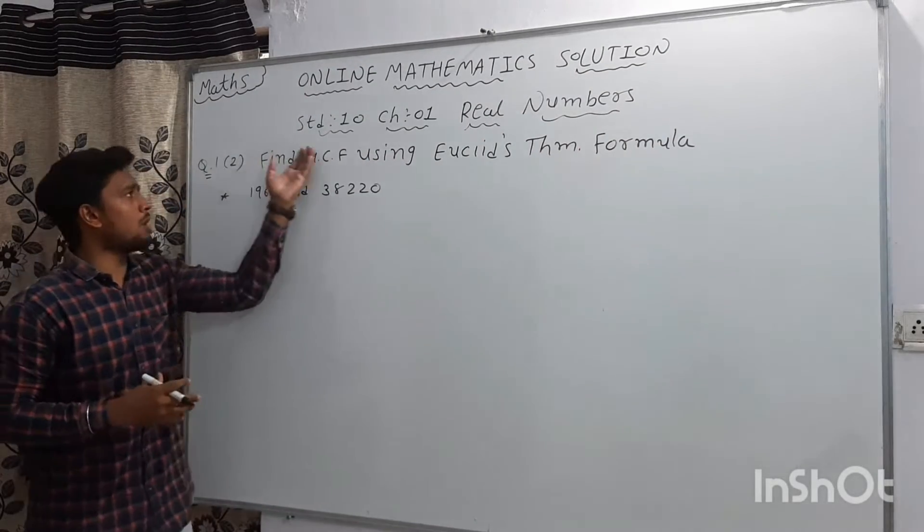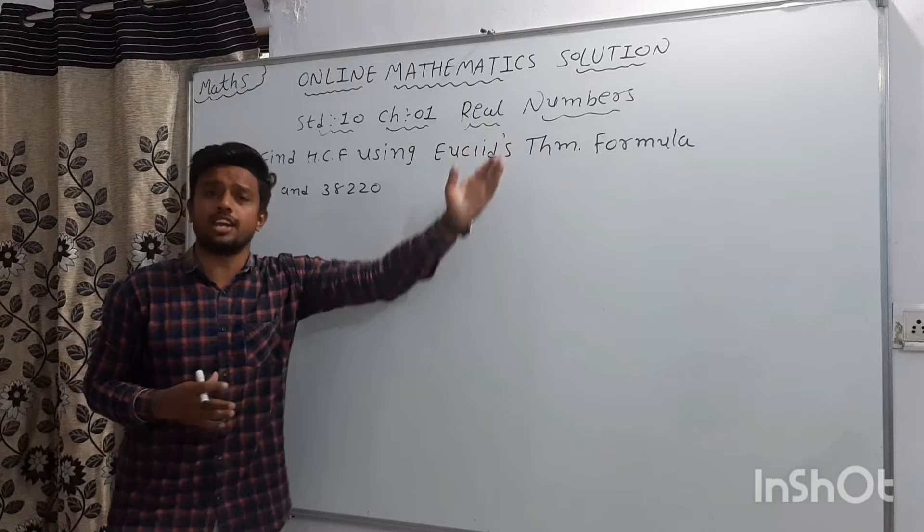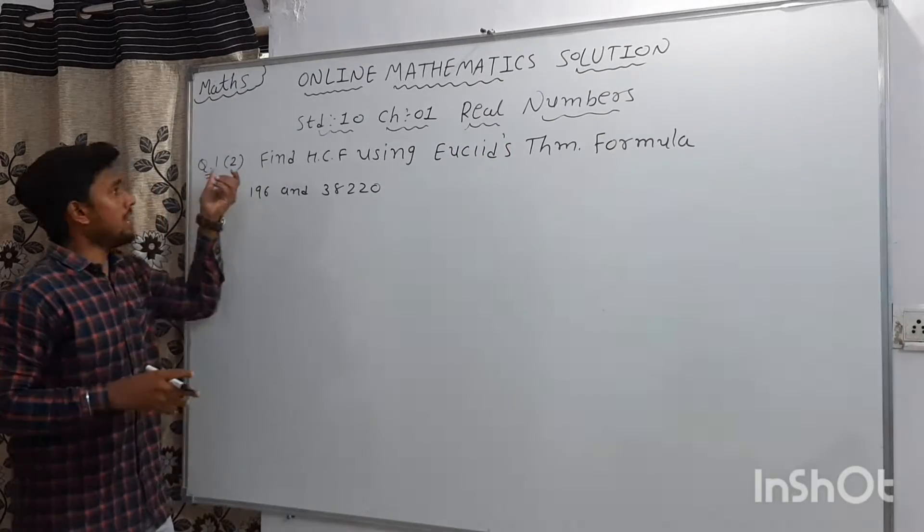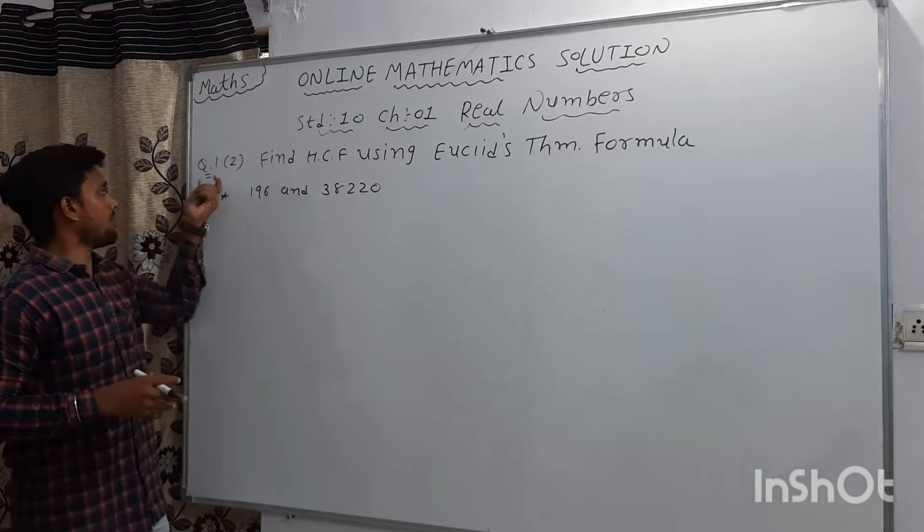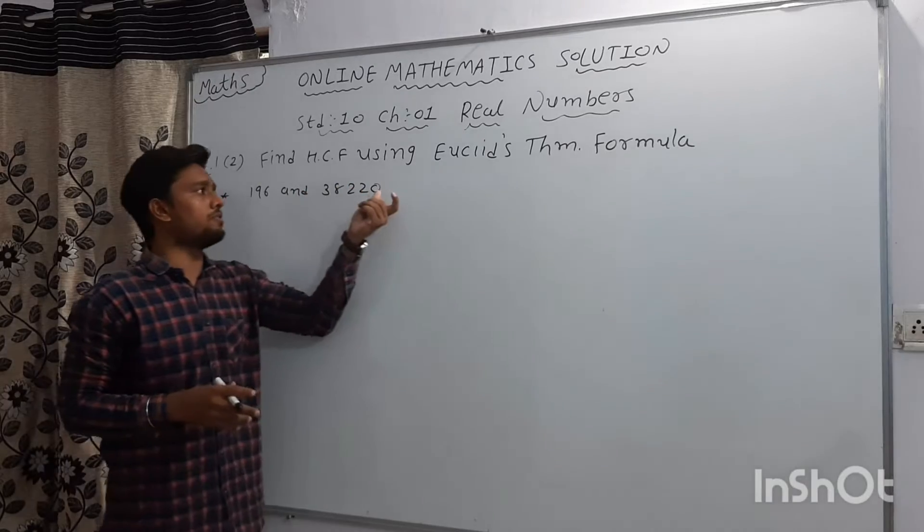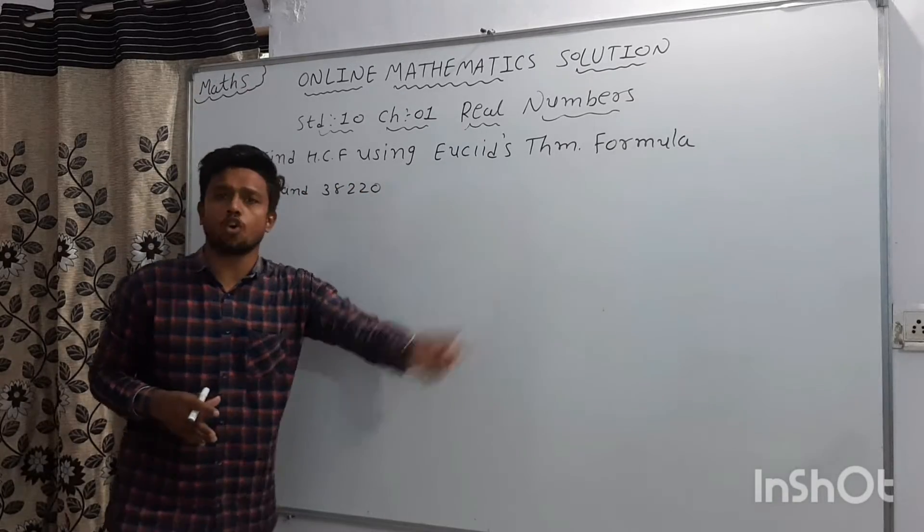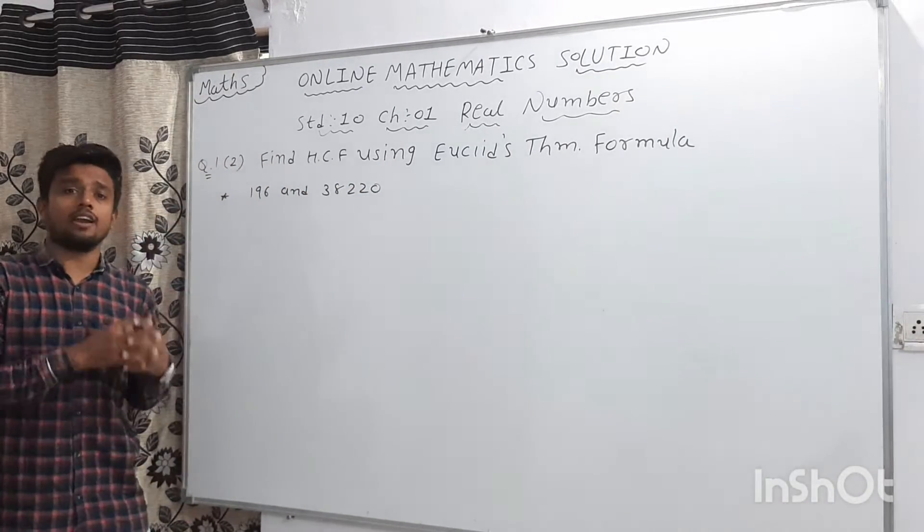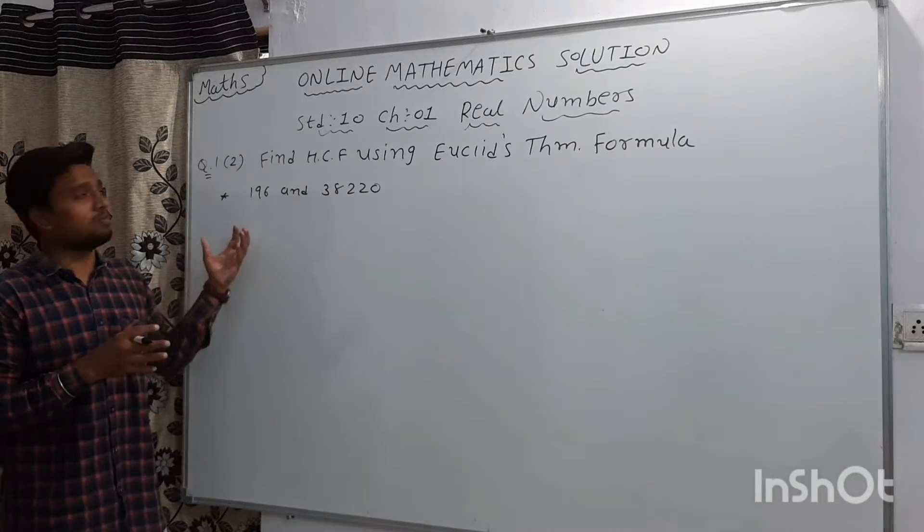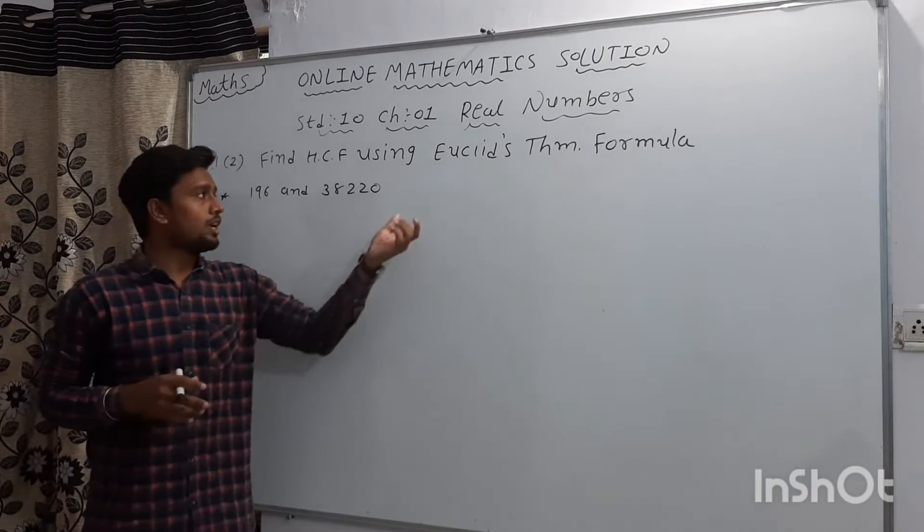We are going to learn about Standard 10, Chapter Number 1, Real Numbers. In Exercise 1.1, Question 1, to find HCF using Euclid's Theorem Formula. We had learned about last sum using HCF, Euclid's Theorem Formula.